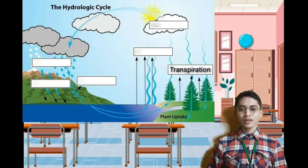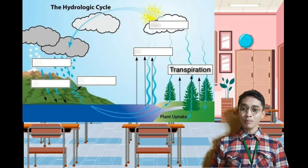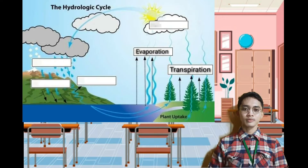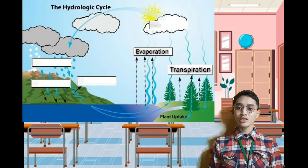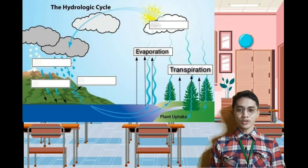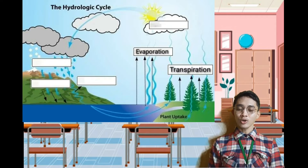Number two: is the process where liquid turns into gas? That's correct — evaporation. Number three: is the process by which water vapor in the air is changed into liquid water? That's correct — condensation.